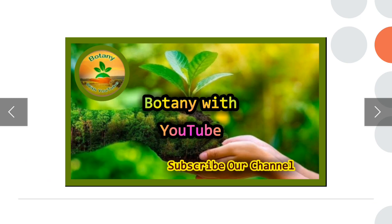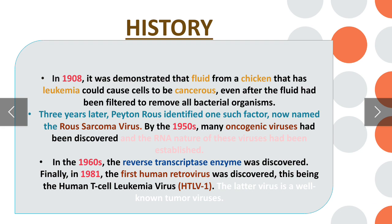Regarding history: in 1908 this virus was first discovered. In 1950, many oncogenic viruses had been discovered and the RNA nature of these viruses had been established. In 1960, the reverse transcriptase enzyme was discovered. Finally, in 1981, the first human retrovirus was discovered — the human T cell leukemia virus, HTLV-1 — which is a well-known tumor virus.